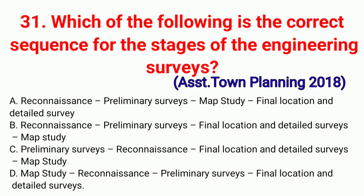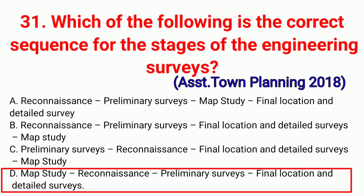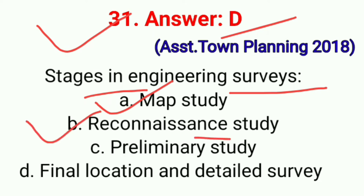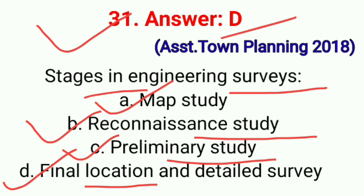Question No. 31. Which of the following is the correct sequence for the stages of the engineering surveys? This question is asked in exam Assistant Town Planning 2018. Correct option D: Map study, Reconnaissance, Preliminary survey, Final location and detailed surveys. Stages in engineering surveys: first, map study; second, Reconnaissance study; third, preliminary study; and last, final location and detailed survey. Correct option D.